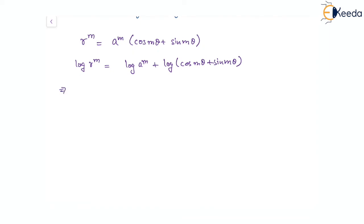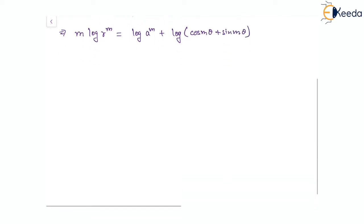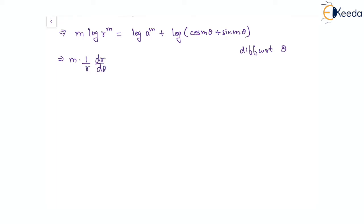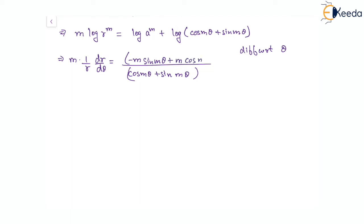Now with the power rule, this becomes m times log r equal to m times log a — we need not change this since it is just a constant — plus log of cos(mθ) plus sin(mθ). Now if we differentiate with respect to θ, we will have m times (1/r)(dr/dθ) equal to 1 over (cos(mθ) plus sin(mθ)) times (minus m sin(mθ) plus m cos(mθ)) in the numerator.